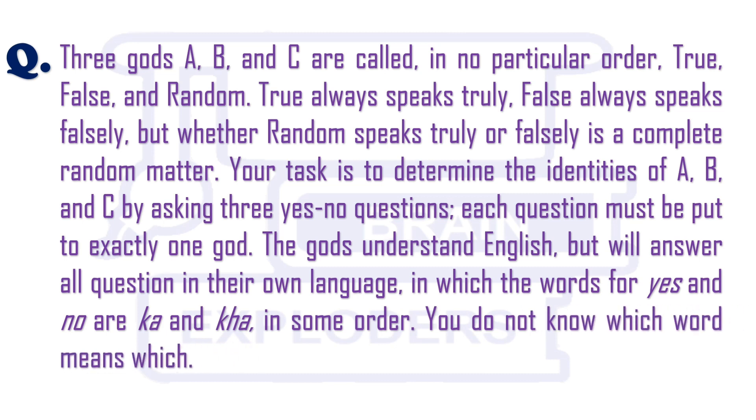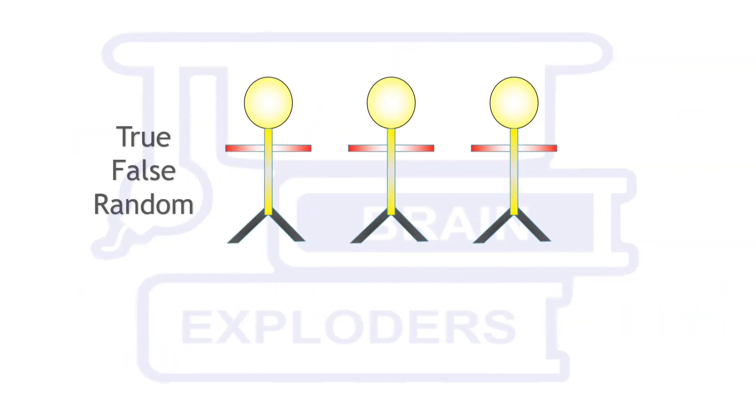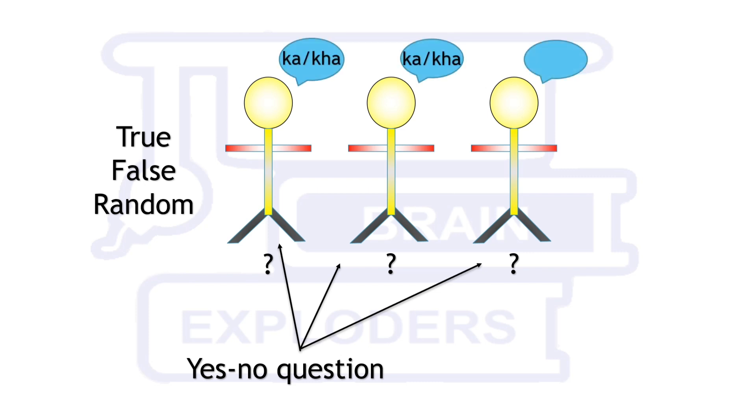Each question must be put to exactly one God. The Gods understand English but will answer all questions in their own language, in which the words for yes and no are Ka and Kha in some order. You do not know which word means which.